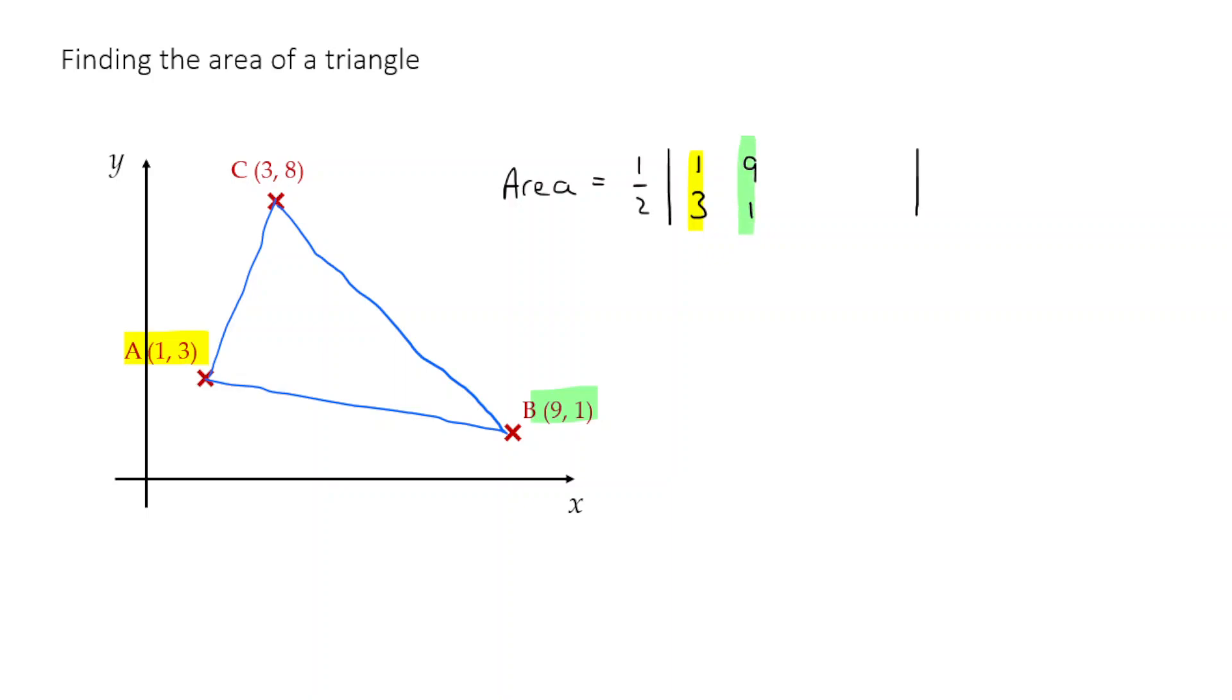So nine, one, that's the coordinates of B. And lastly, I'm going to take the coordinates of C, three, eight, and enter them in as my last column here. I say last because actually there is one more column that I need to add. I need to repeat the first column, the elements for the point A. So I repeat one, three there again.